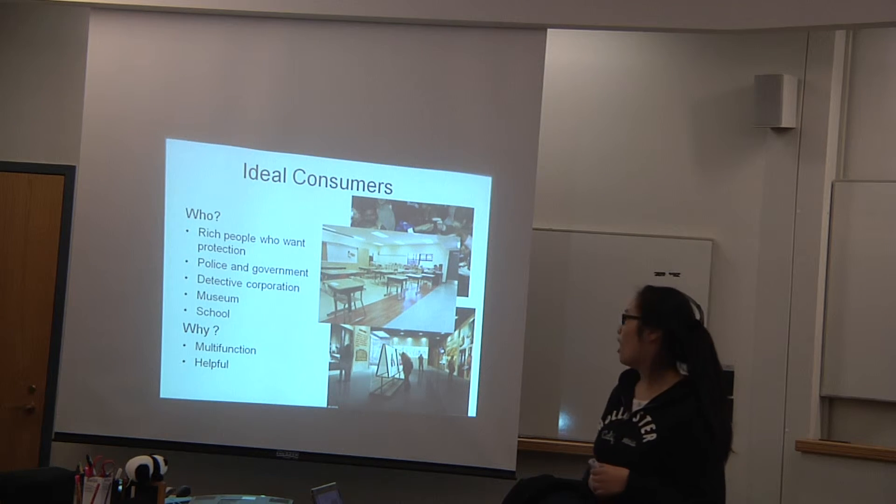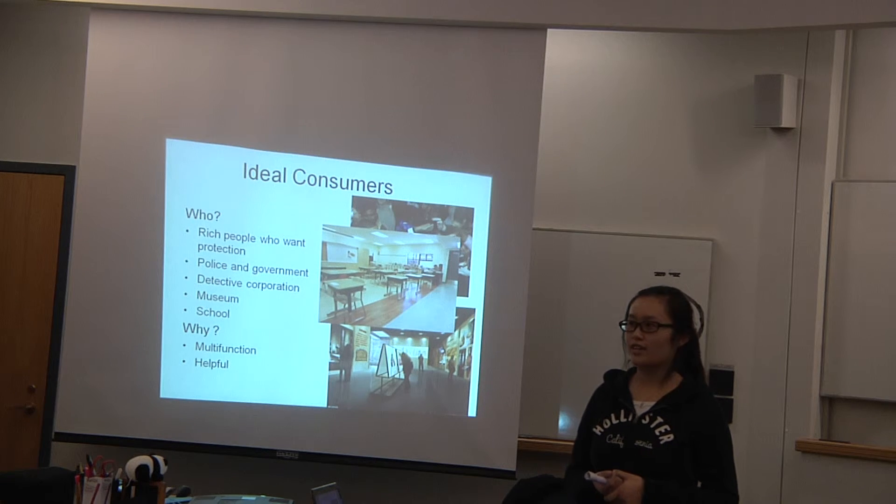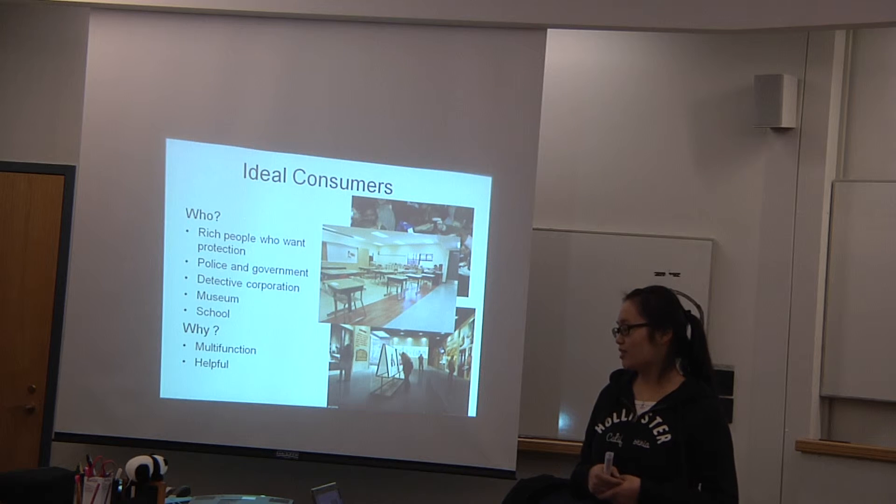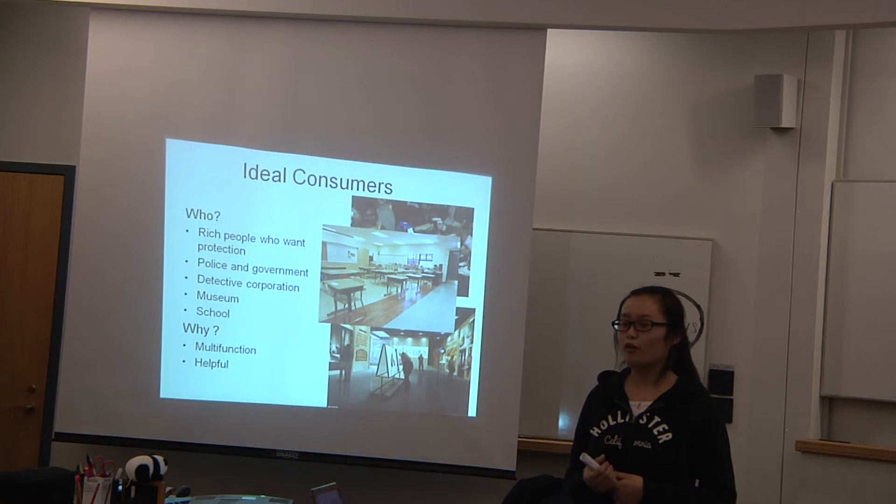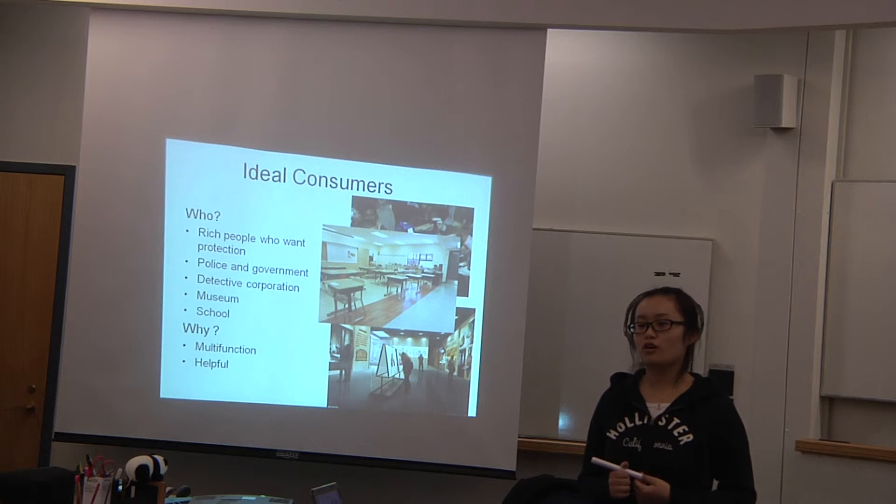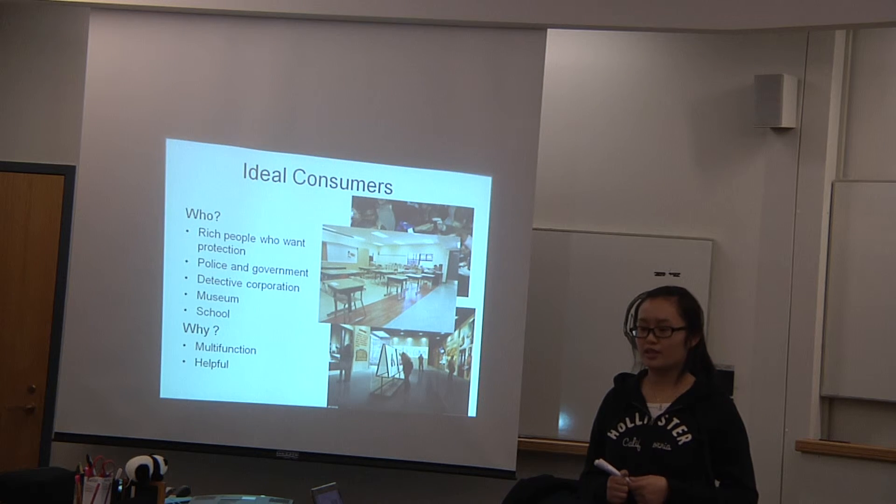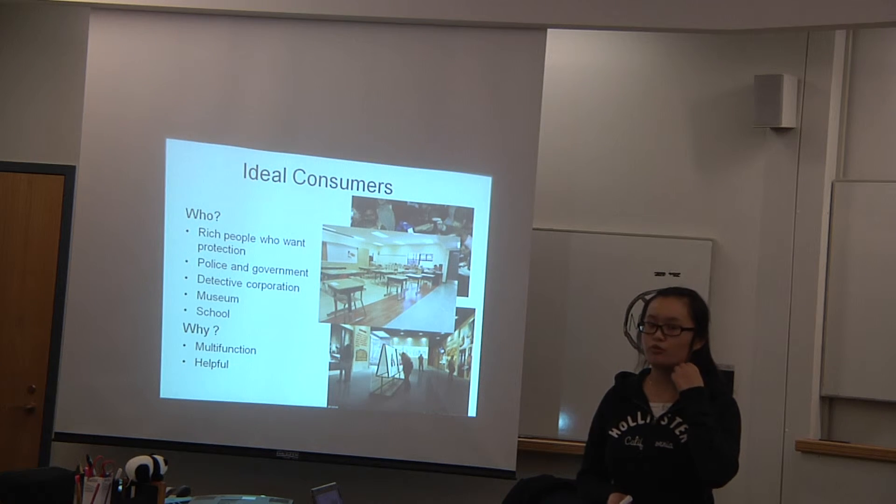And who will buy our robots? First is the rich man who wants protection. Our robot is different from other robots because it is a police and detective robot. The price is a little expensive. Not all families can buy it. The next is the police and the government. If the police and the government buy this, they don't worry about other people stealing their important papers. Our robot has a camera. He can remember all the people's faces. The next is the detective corporation. This is the important job for our robot. And the next is the museum and school. If they have a criminal in the school and children being injured, our robots can easily help the school to find the criminal.